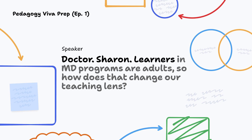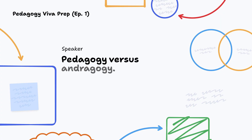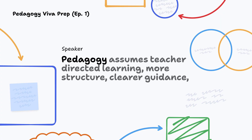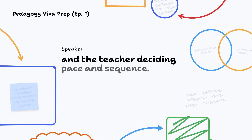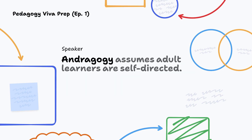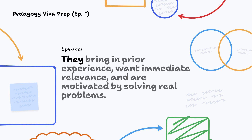Learners in MD programs are adults — so how does that change our teaching lens? Pedagogy versus andragogy. Pedagogy assumes teacher-directed learning: more structure, clearer guidance, with the teacher deciding pace and sequence. Andragogy assumes adult learners are self-directed; they bring prior experience, want immediate relevance and are motivated by solving real problems.